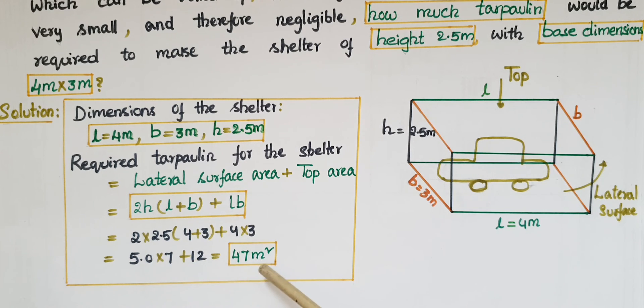That is 47 meters square. So the required tarpaulin for the shelter is 47 meters square.